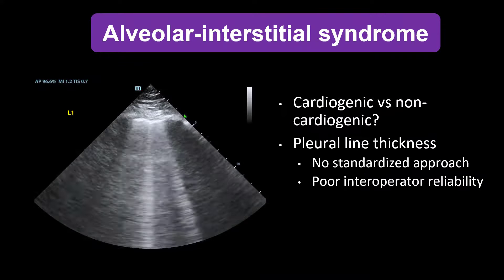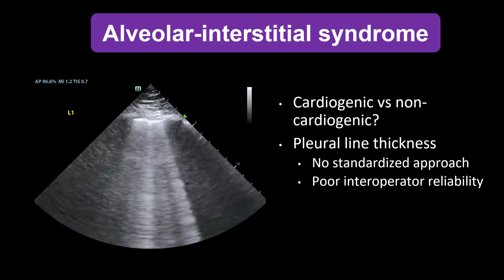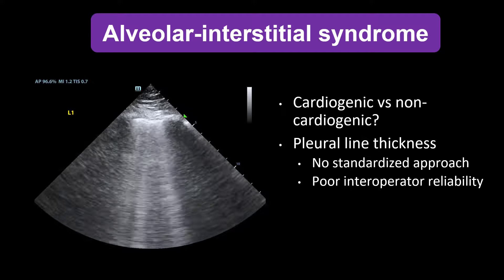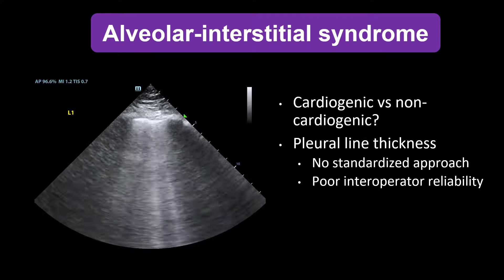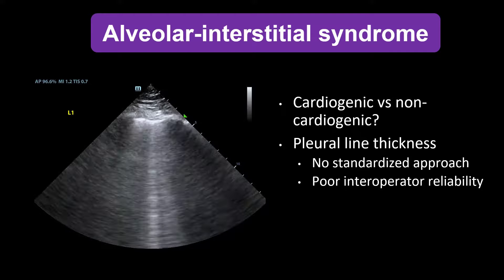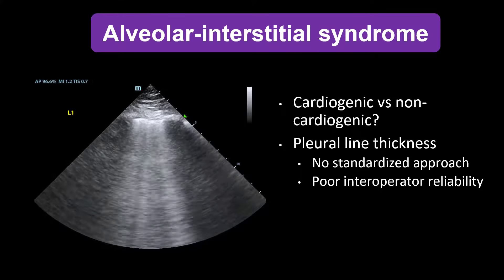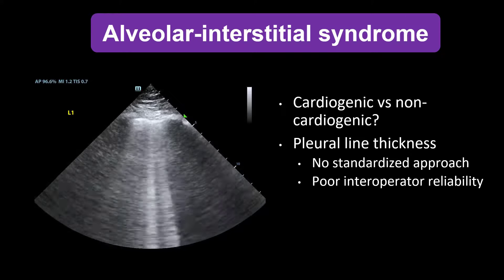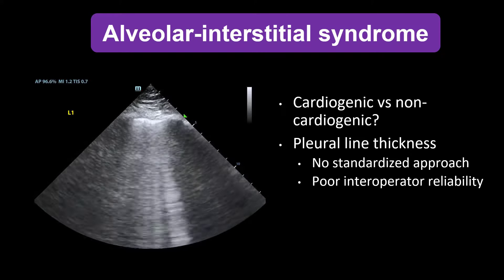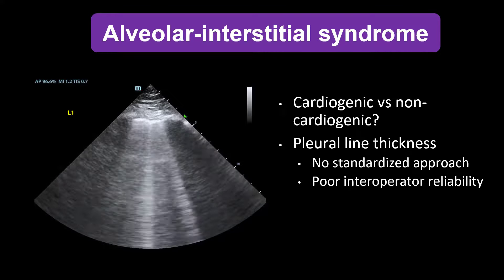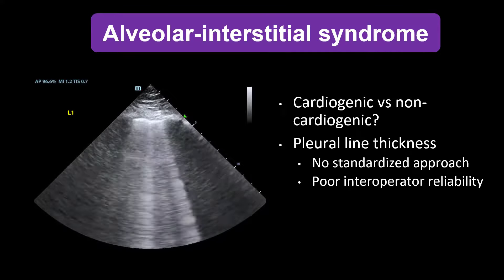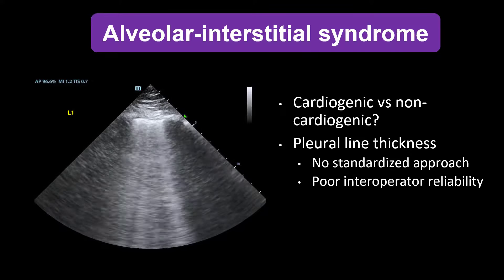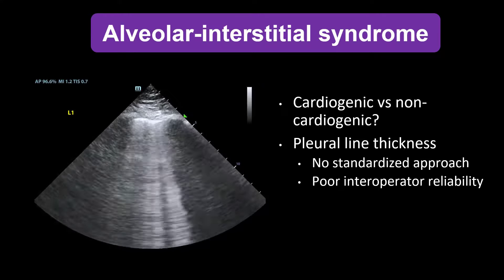Before we talk about left atrial pressure, we need to briefly mention lung ultrasound and the pleural line. Alveolar interstitial syndrome is defined by the presence of diffuse bilateral B lines. The next question at this point is usually whether this represents cardiogenic or non-cardiogenic pulmonary edema. The only thing on lung ultrasound that helps you distinguish the primary etiology of bilateral B lines is the pleural line. In cardiogenic pulmonary edema, the pleural line is usually smooth and regular, whereas in a diffuse infectious or inflammatory process, the pleural line is often thick and irregular.